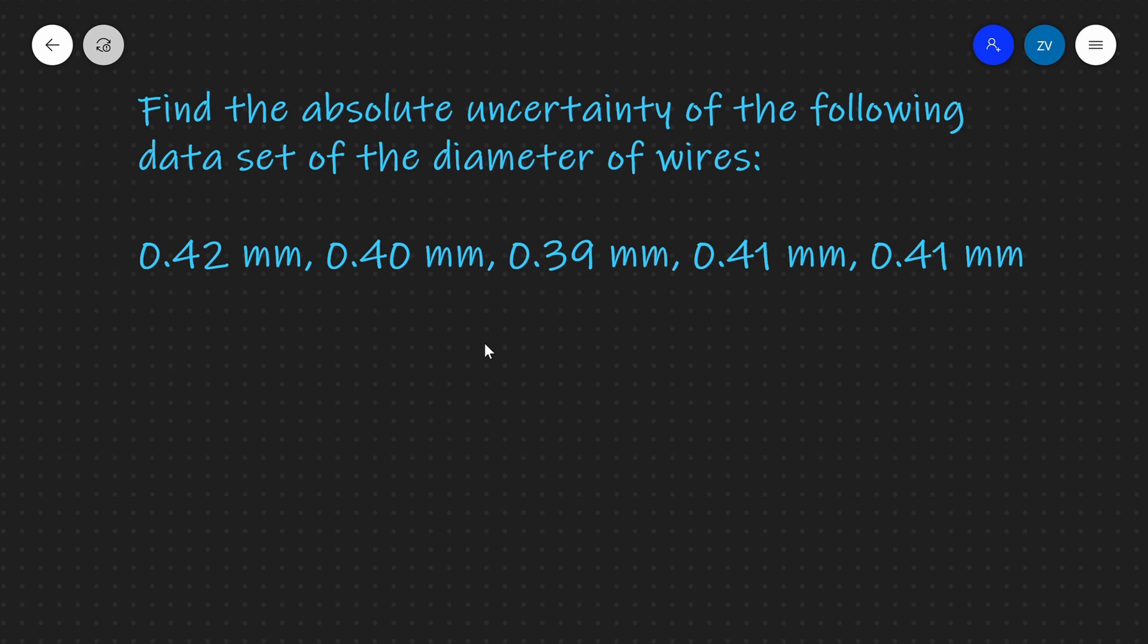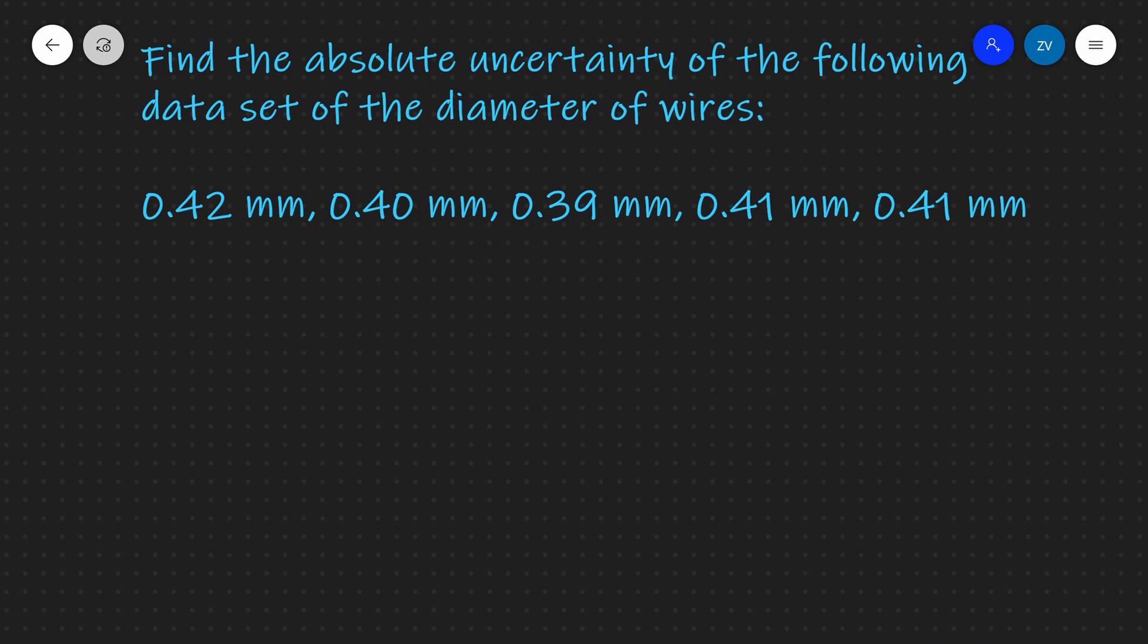Now we can find the absolute uncertainty directly from the data set. The rule that we're going to use is that the absolute uncertainty can be approximated. What I'm going to write here is that our absolute uncertainty is approximately equal to half the range.